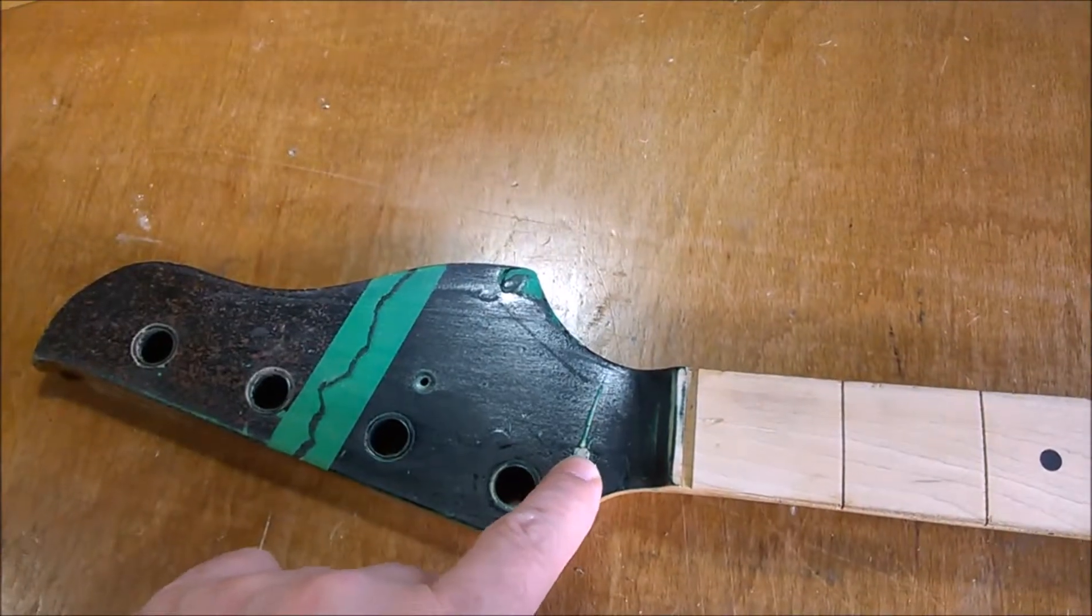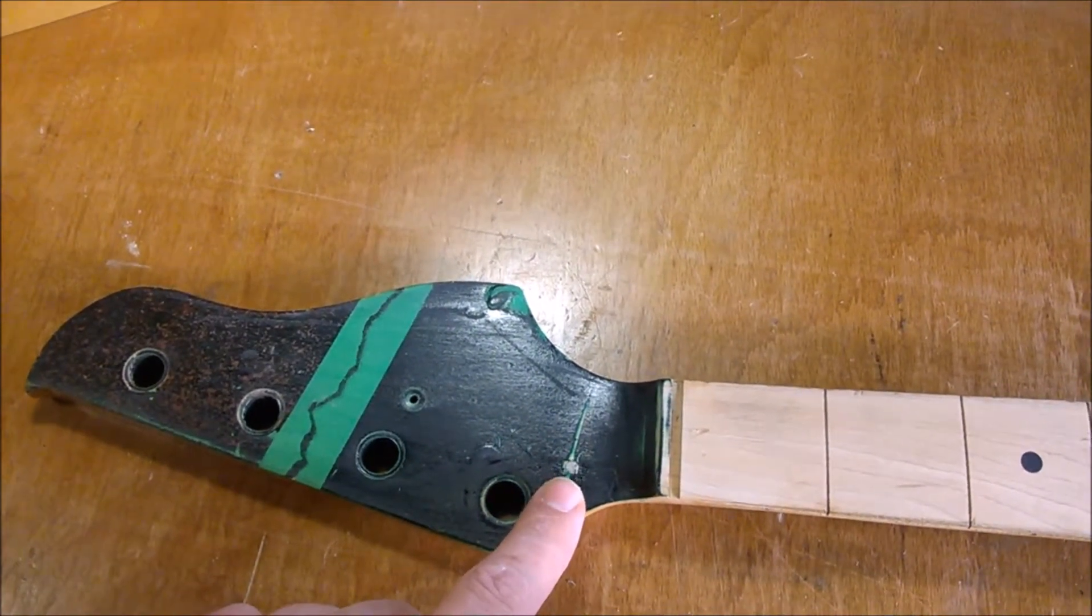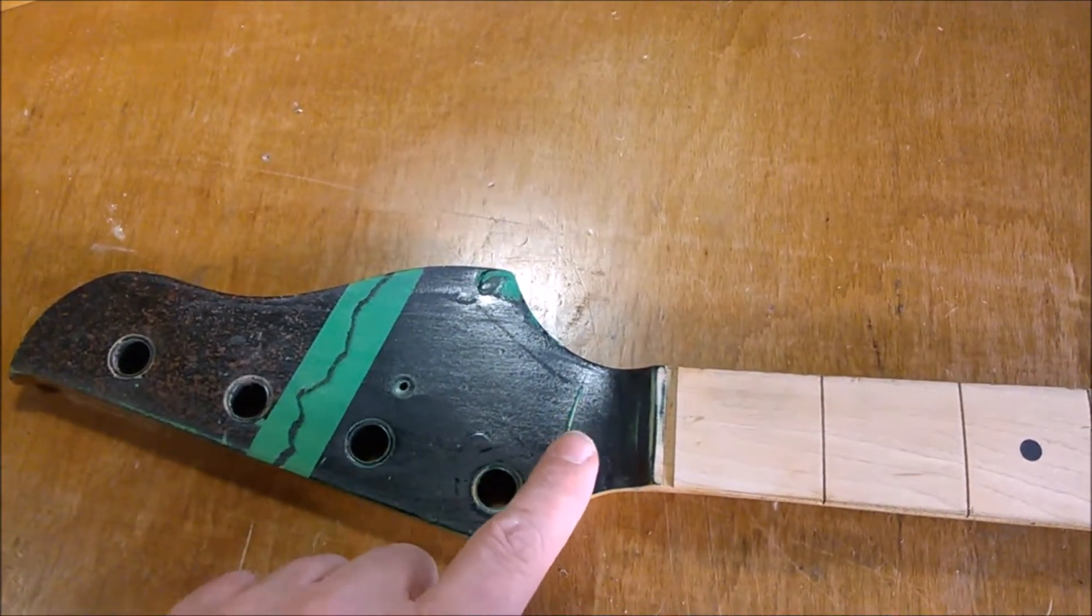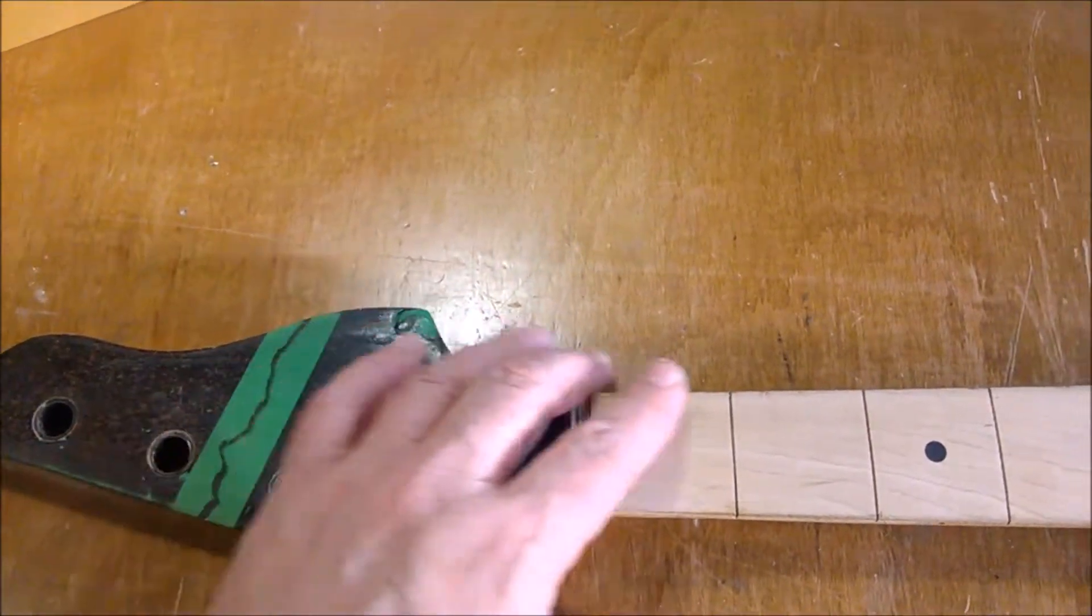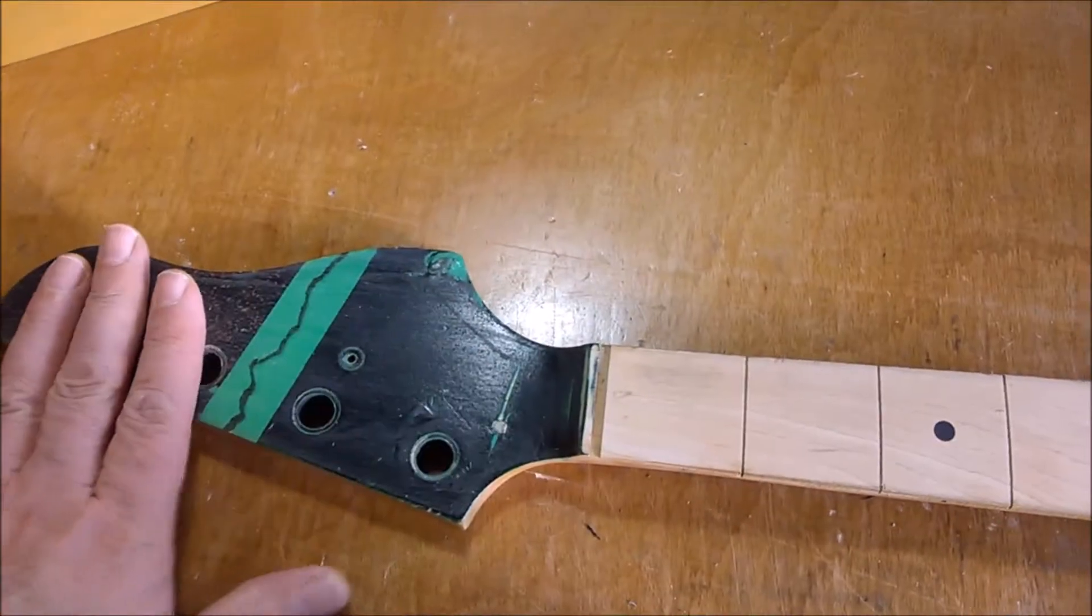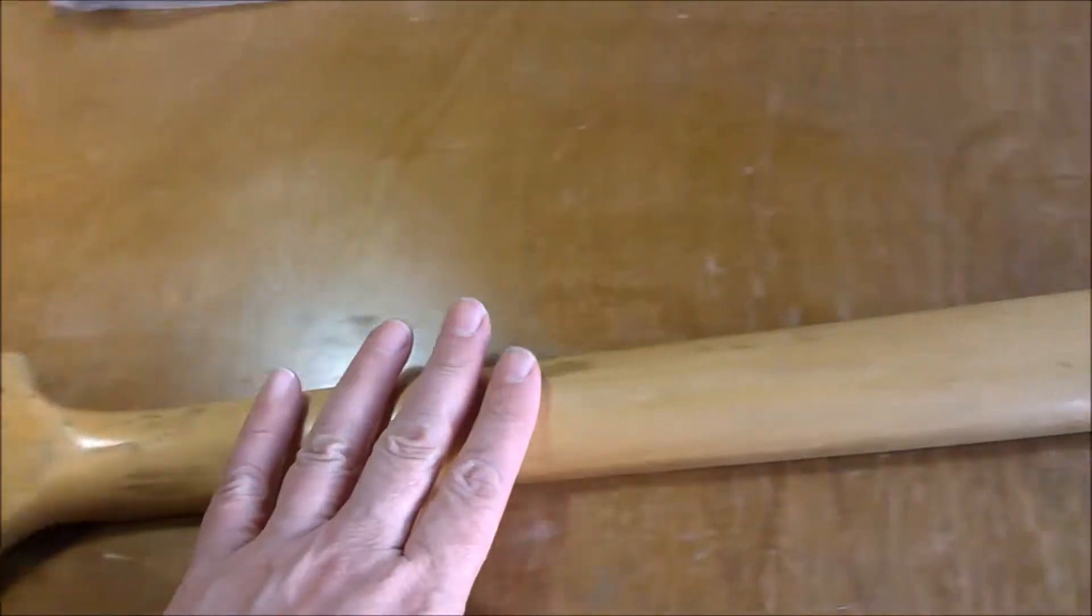Next job is to remove the paint from the headstock. I filled in the hole where there was a wood screw holding some kind of weird made up string tree in there, which isn't necessary because the angle from the nut down to these two tuners is fine. So the next job is to remove that paint.